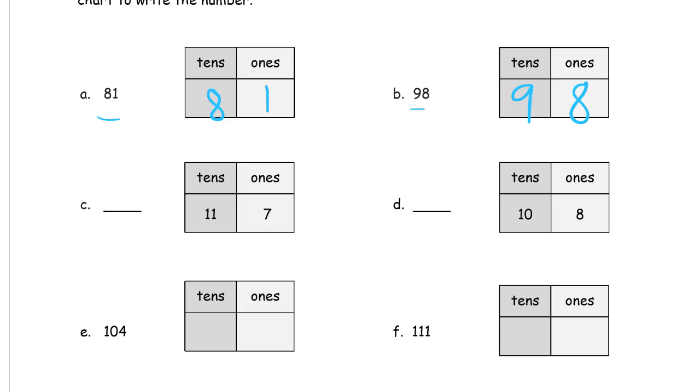And if you don't know the names of these numbers, or they come hard for you, or you're not sure, you can just listen to what I say and then try it yourself later. Here we have 11 tens and seven ones. That's 117. And here we have 10 tens and eight ones. That's 108. 104 is 10 tens and four ones. 111 is 11 tens and one one.